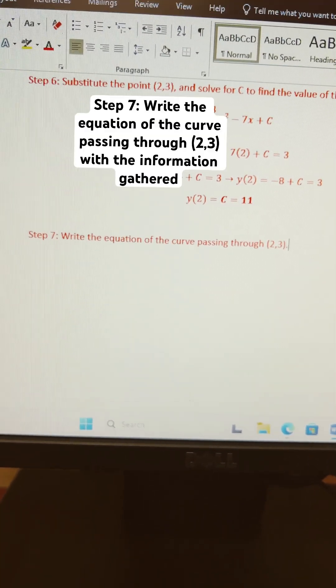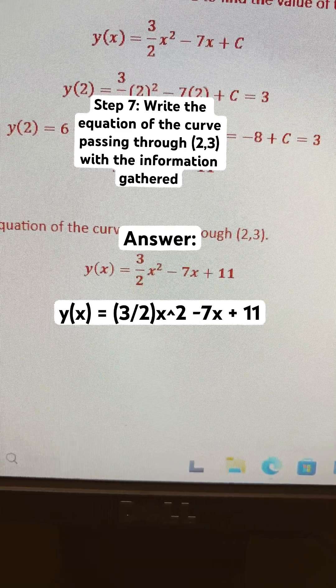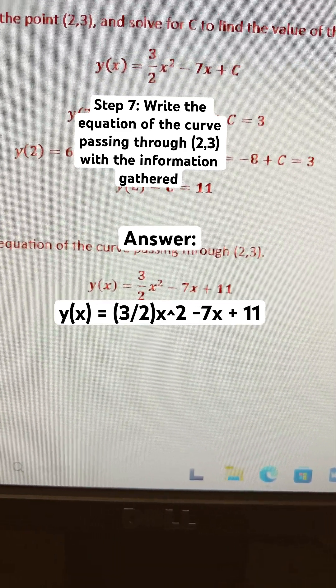Step 7 is to finally write the equation of the curve passing through the given point. Our answer is y(x) equals (3/2)x² minus 7x plus 11.